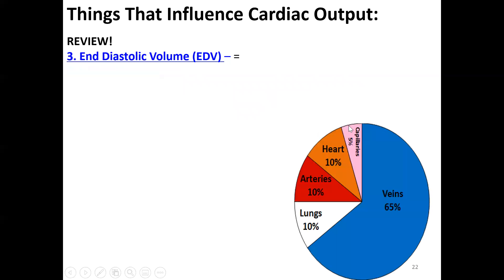Most people assume that most of your blood at any particular time is in your arteries, but it's not. Actually, most of your blood at any particular time is in your veins. There's some in your lungs, some in your arteries, some in the heart itself, but most is in the veins because veins are elastic and stretchy, and gravity pulls blood down into them.